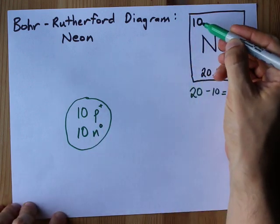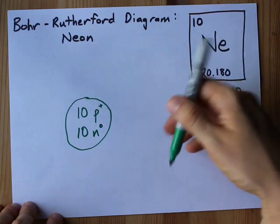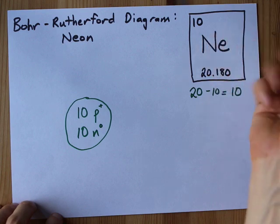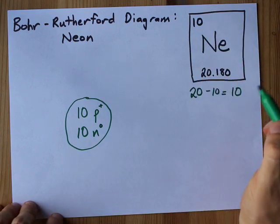I need 10 electrons as well. This is a neutral atom. They haven't told us anything otherwise. And by the way, noble gases generally don't get charges because they don't bond. So 10 electrons it is.